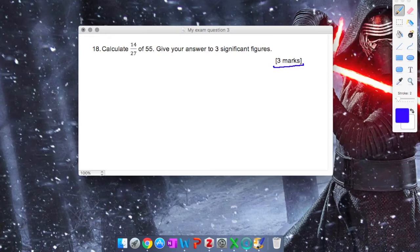The first thing I notice is that the question is asking me to give the answer to three significant figures. That means my answer will be as a decimal. That actually makes my life a little easier, because I don't have to work in fractions. There are several different ways of going about this type of question. We're doing 14 27ths of 55.